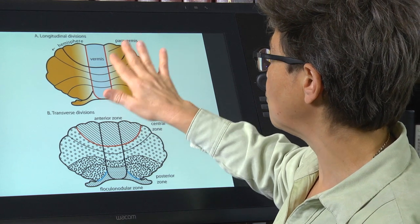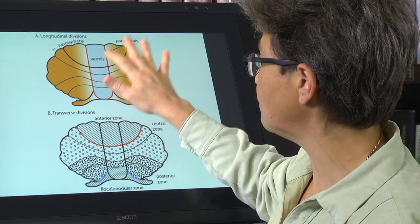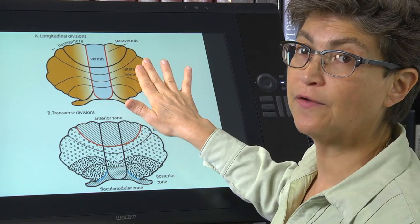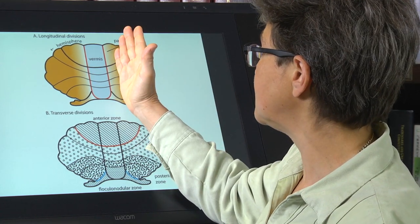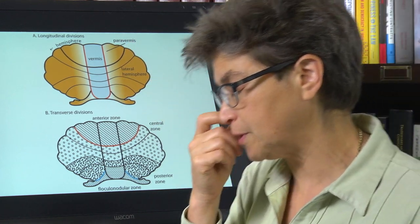And then, so we talk about three major regions: the vermis, the paravermis, and then the lateral parts of the hemispheres or the lateral lobes or the lateral hemispheres. So that's not the entire hemisphere, that's the lateral part, the part that does not include the paravermis.